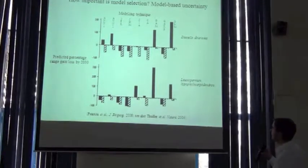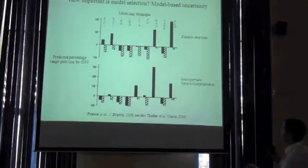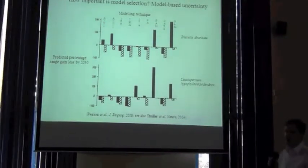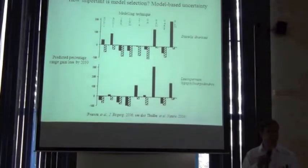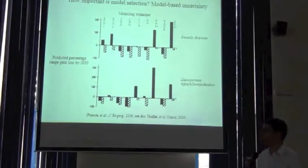I'm not going to go into any more details on that because Enrique is going to talk about these things within the context of applications later on. The only important point now is to say that we were able to quantify the predicted range gains and losses. So you only get a loss when you assume that there's no dispersal ability.